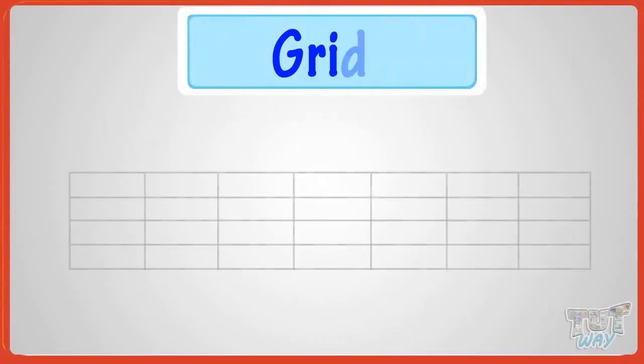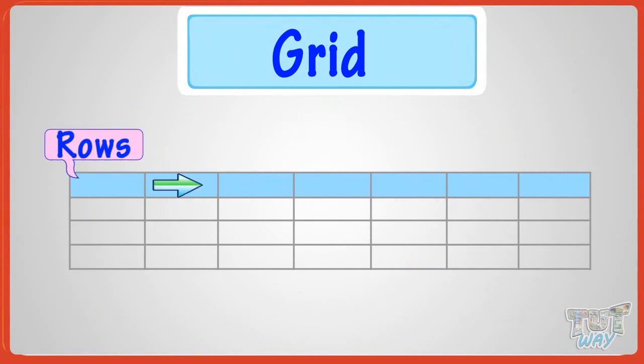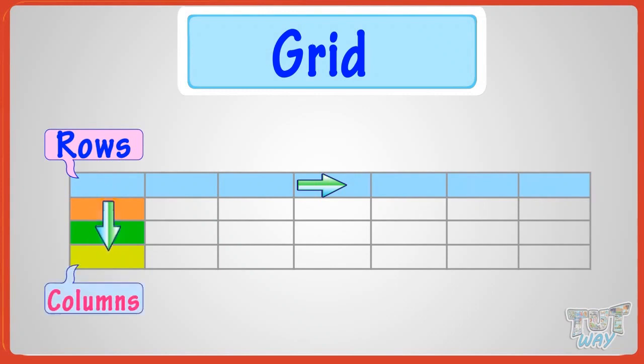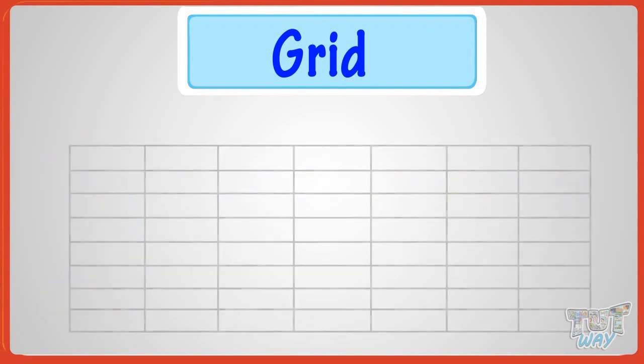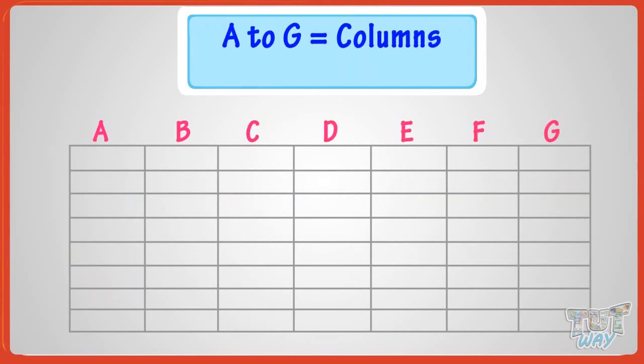Here is a grid. The horizontal partitions in the grid are called its rows, and vertical partitions in grids are called columns. We can give names to rows and columns, like here. Alphabets A to G are assigned to columns, and numbers 1 to 8 are assigned to rows.